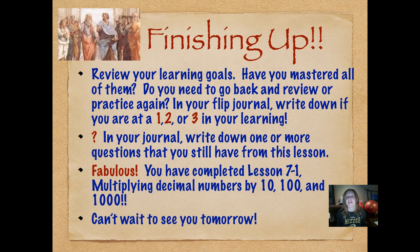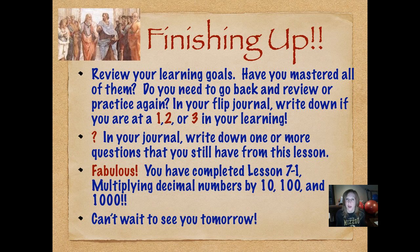Finishing up — this was fun tonight. It's pretty basic: there are three steps to use mental math to multiply decimal numbers by 10, 100, or 1,000. If you still have parts you're unsure about, make sure you write those questions down in your flip journal. Also write down whether you're at a one, two, or three level in your learning — that helps us help you when you come back to class. You have completed Lesson 7-1: Multiplying Decimal Numbers by 10, 100, and 1,000. I can't wait to see you tomorrow.